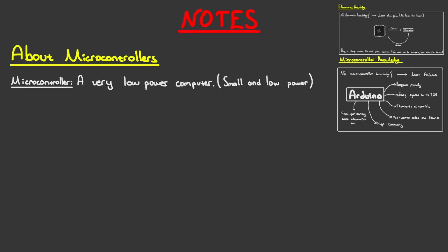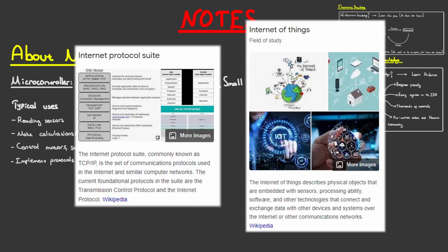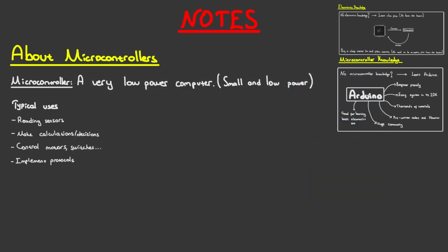A small, low-power computer like microcontrollers are perfect for reading sensors, using their data to make calculations and decisions, to control a variety of things like motors or switches, or to simply handle sets of protocols like TCP IP used for Internet of Things, also known as IoT applications. These are, of course, only a fraction of the examples for microcontrollers.